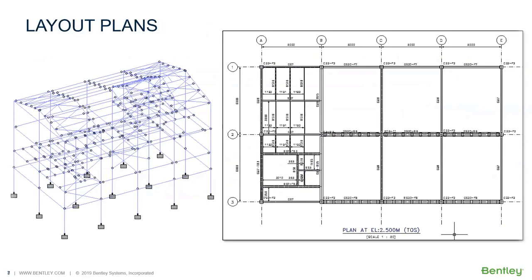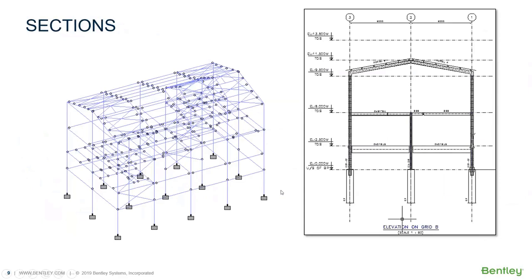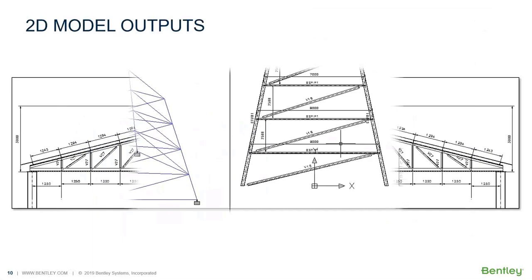This is the plan layout from the Steel AutoDrafter — the plan view and the three-dimensional skeleton diagram. After designing, the user can draw and draft all GA drawings. This is the sectional drawing, this is the 2D model output, this is a projected view. We will also show the connection design.